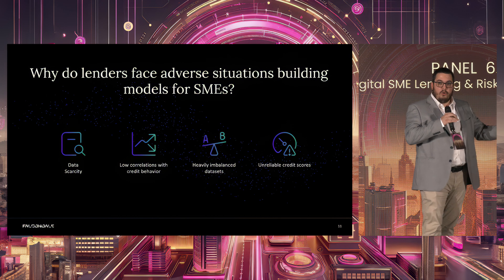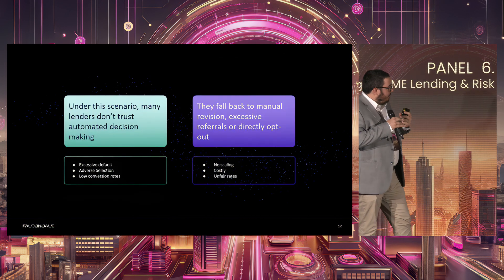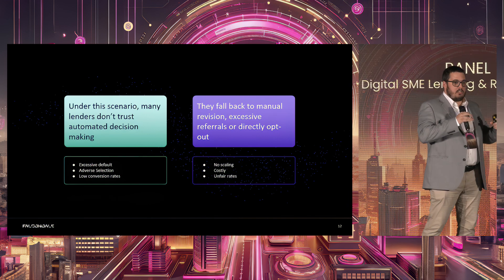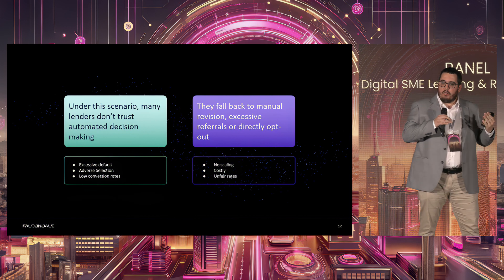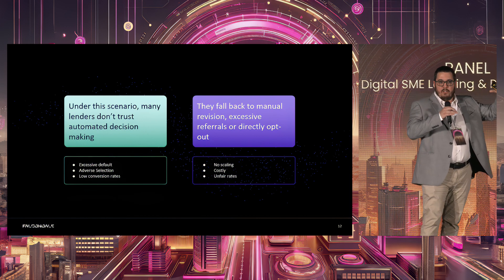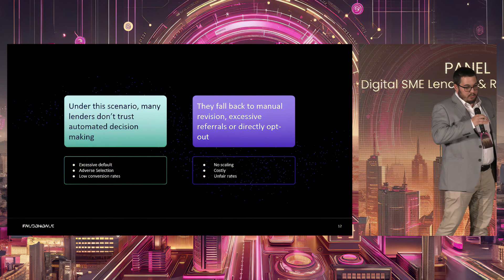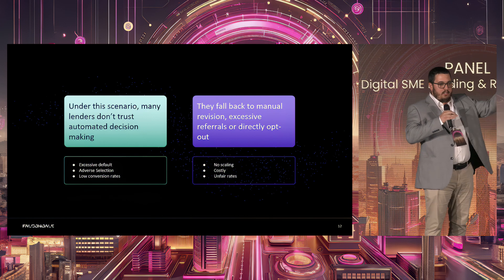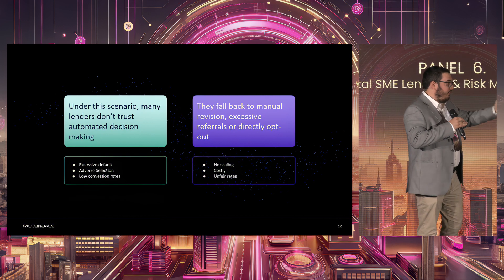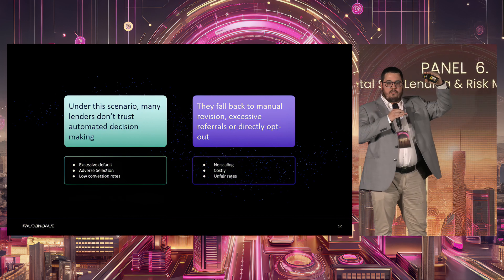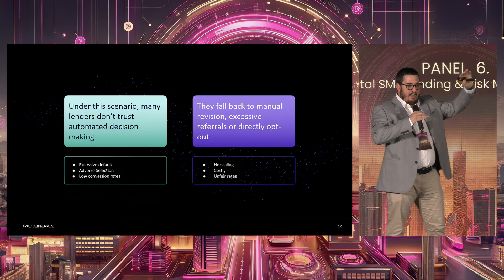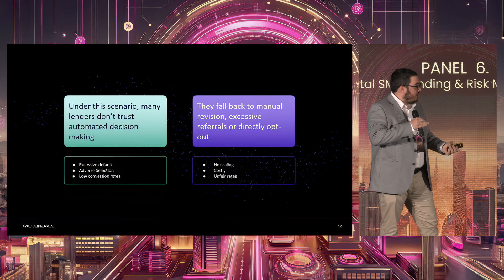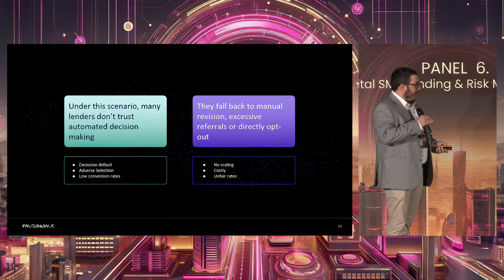How can you differentiate from the market? Under this scenario, a lot of lenders don't trust automatic decision making, so they face excessive default and adverse selection — when you raise the interest rate to compensate, you end up with only the companies that will take any money at any price, and those companies actually don't pay back. And if you go very strict because you don't trust the model, you end up with a 5% approval rate, high cost of acquisition, and everything falls back to manual revision.